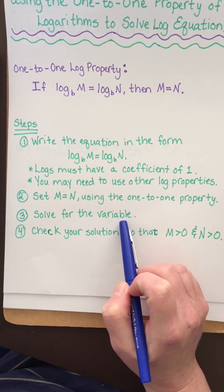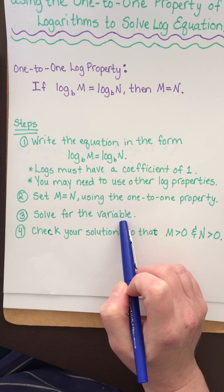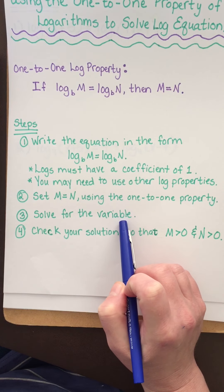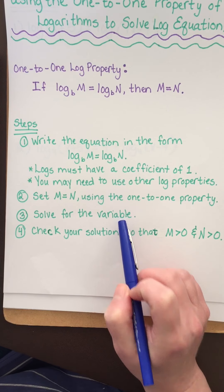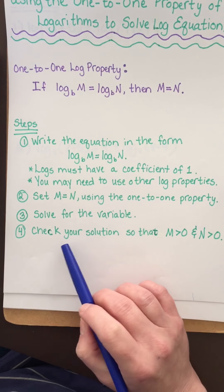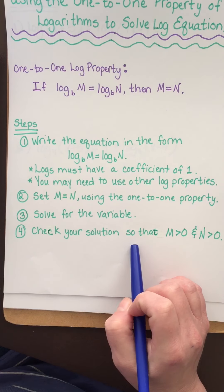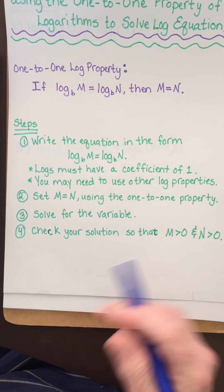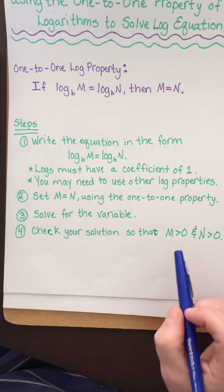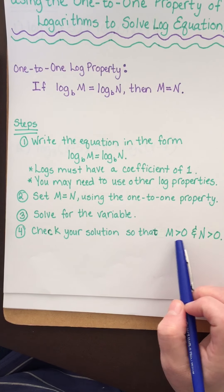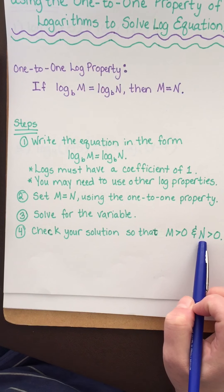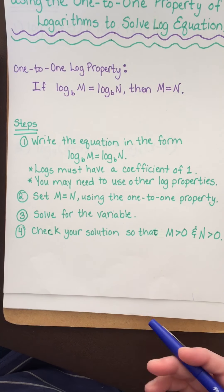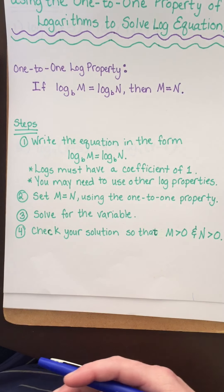Some of them could be quadratic, so you might need to factor, use the quadratic formula, whatever you're comfortable with. Then you just want to check your solution and make sure whatever you're plugging in for x — m and n have to be greater than zero, because you can't take the log of zero or a negative.